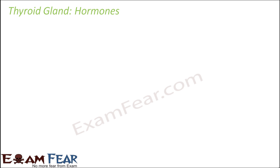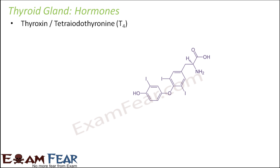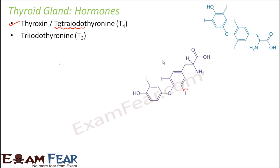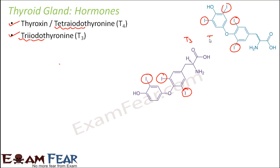The first hormone secreted by the thyroid gland is thyroxin, also called tetraiodothyronin (T4). As the name suggests, it contains a thyronin group with four iodine atoms, which can be seen in its structure. The second hormone is triiodothyronin (T3), which has three iodine atoms attached to the thyronin group. Together these are referred to as T3 and T4.